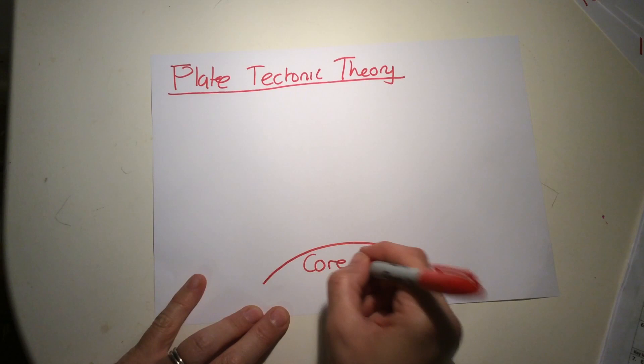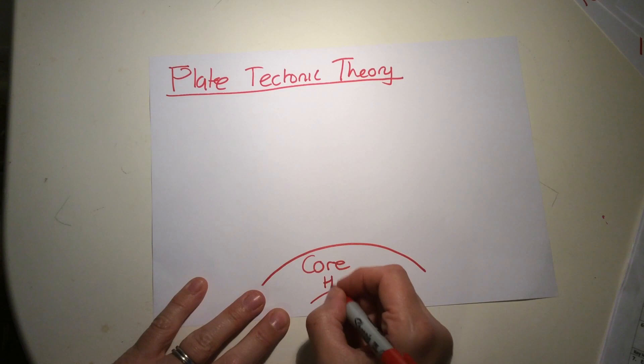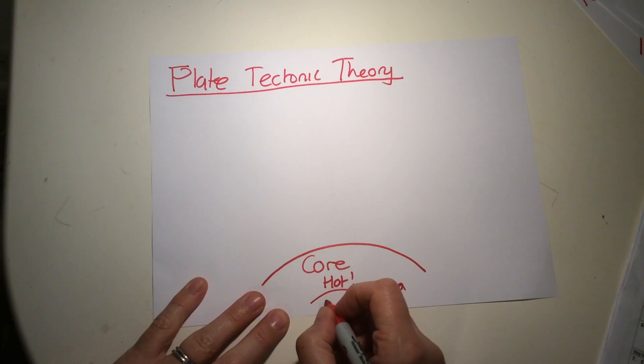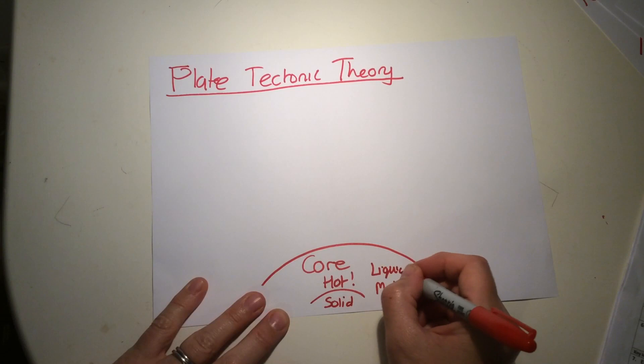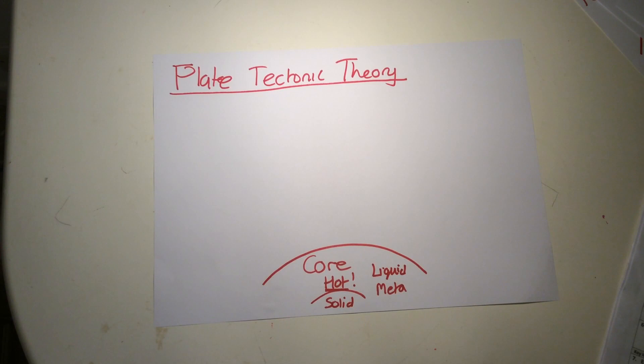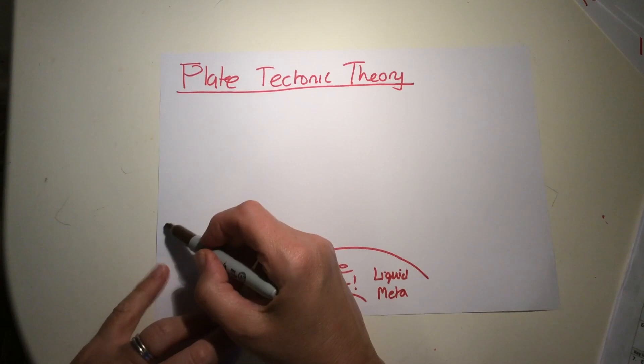We have the Earth's core—there's an inner and an outer core—but for this theory what we need to know is it's very, very hot and it's made of metal. The inner core is solid, the outer core is liquid, but the key thing is it's very, very hot. The layer above this is called the mantle.